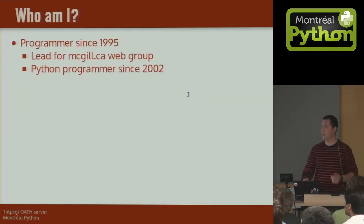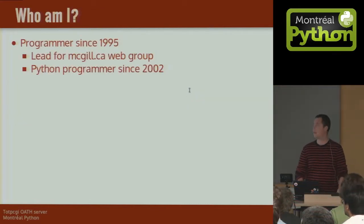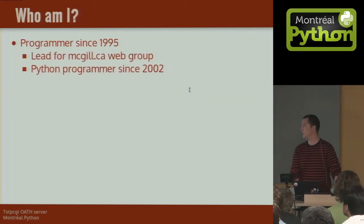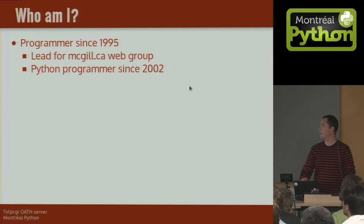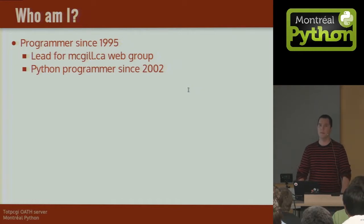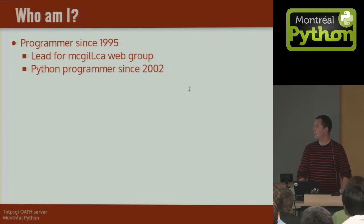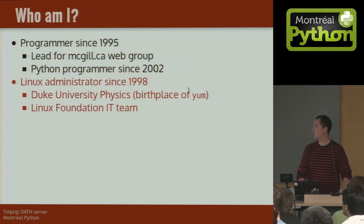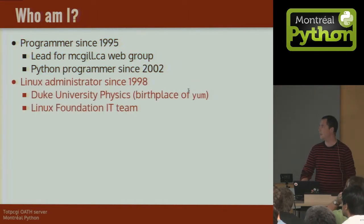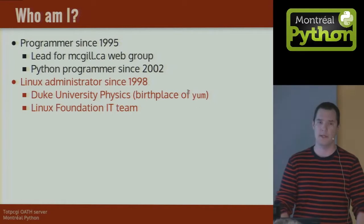So who am I? I've been a programmer since 1995, which is not a very long time. I used to work for McGill — I was head of the web group at McGill University. I was a Python programmer since 2002 and a Linux administrator since 1998. I worked at Duke University of Physics, and I co-wrote Yum — well, I helped out the creation of Yum.